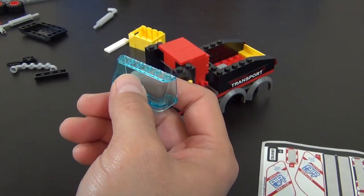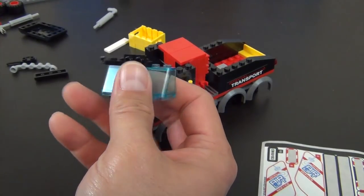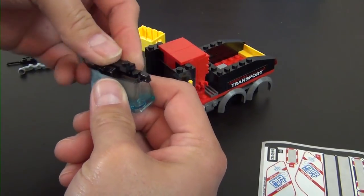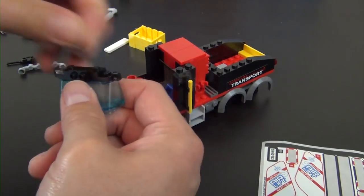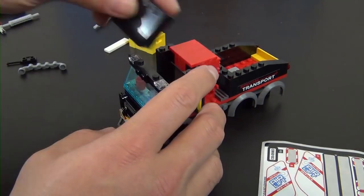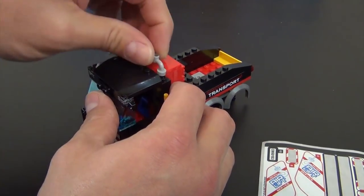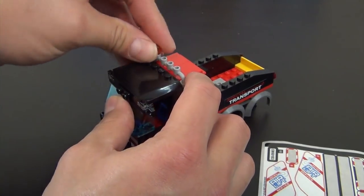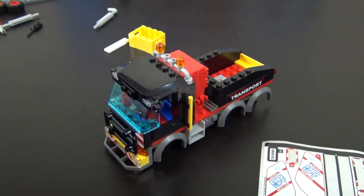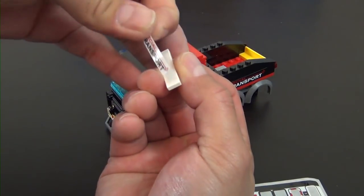Here's our windscreen. That goes there. We have our roof portion. Right there. This little light bar. It'll go on the top. Two of these orange dome lights. Right there. Sticker number one. Go on this tile.